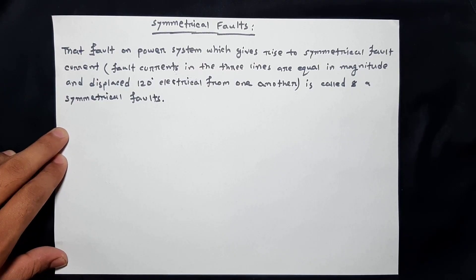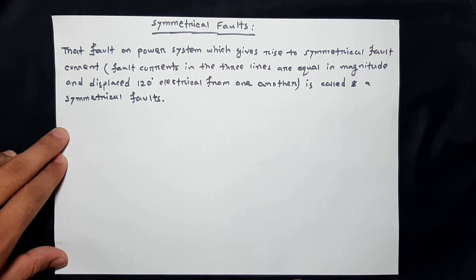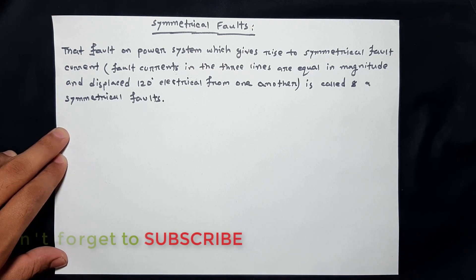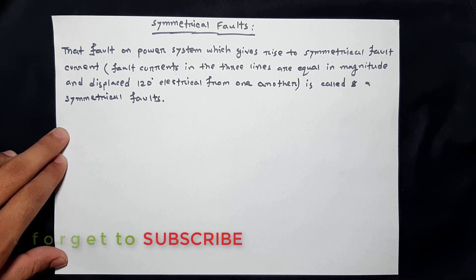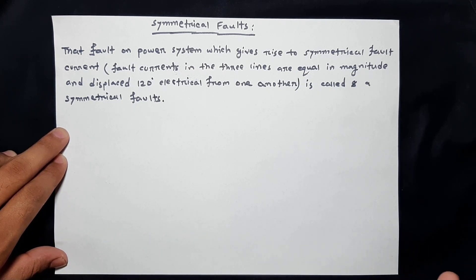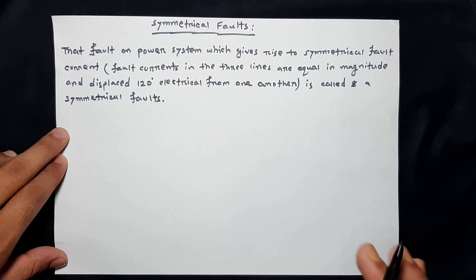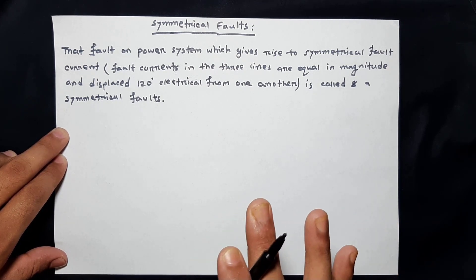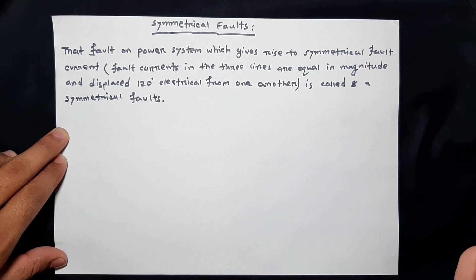Hi, power system. In this video you will see symmetrical fault. Basically, power system has two different faults: one is symmetrical fault and one is unsymmetrical fault. As electrical engineers, fault analysis is very important, because when a fault occurs, huge current flows through the conductor, and the electrical equipment — televisions, computers, and other components — can be damaged by this huge current flow.